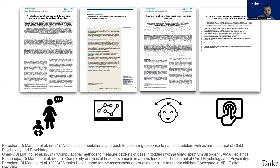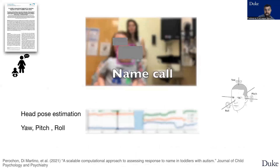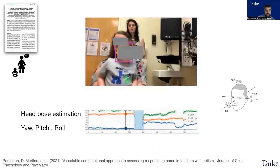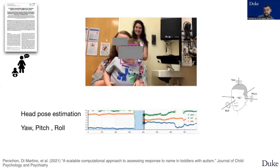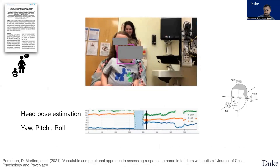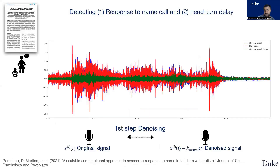Let me go through our past findings. Name call response: using facial landmarks, we estimate the head pose angles from which we apply a moving smoothing filter on the yaw angle. Subsequently, we look for the yaw gradient when the name call is administered to see if the child turns back. Voice detection is done by denoising background noises, focusing on the foreground voice related to name call quality examples.